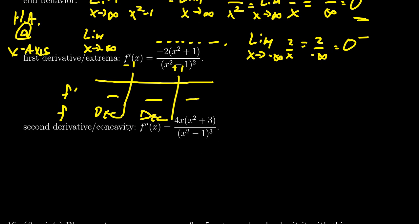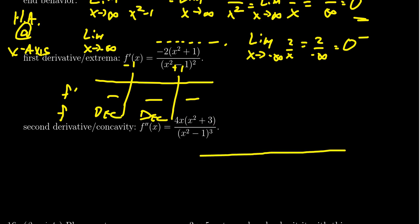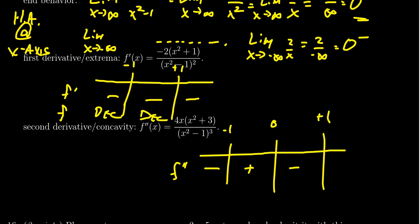Now, what about the second derivative? Looking at the numerator, you get x² + 3, which is always positive and never changes sign. There is a potential point of inflection at x = 0, and (x² - 1)³ shows up from the quotient rule in the denominator. For the sign chart, we consider x = -1, x = 0, and x = 1. The second derivative switches sign from negative to positive at x = -1, from positive to negative at x = 0, and from negative to positive at x = 1. So the concavity is: concave down, concave up, concave down, concave up across those intervals.